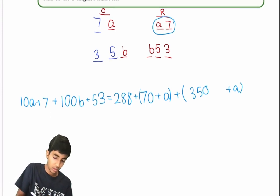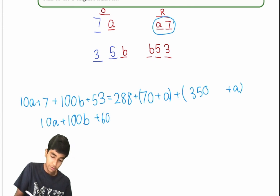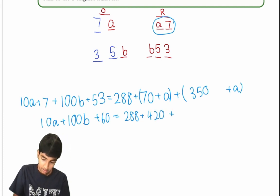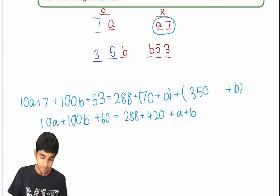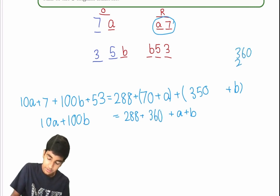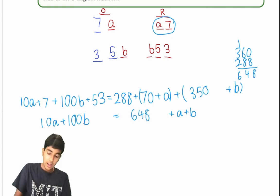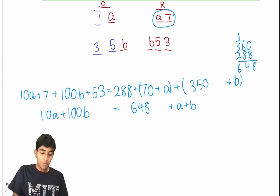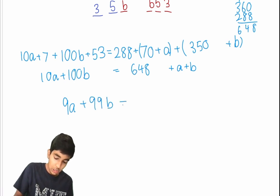There's a lot going on, a lot of constants we can cancel. We get 10A plus 100B plus 60, and 53 plus 7 equals 288 plus 420, which is 70 plus 350, plus A plus B. You can subtract 60 from both sides, and now 360 plus 288 equals 648. So this is going to be 648, as you can see. So now what we can do is subtract A and B from both sides. We get 9A plus 99B equals 648.